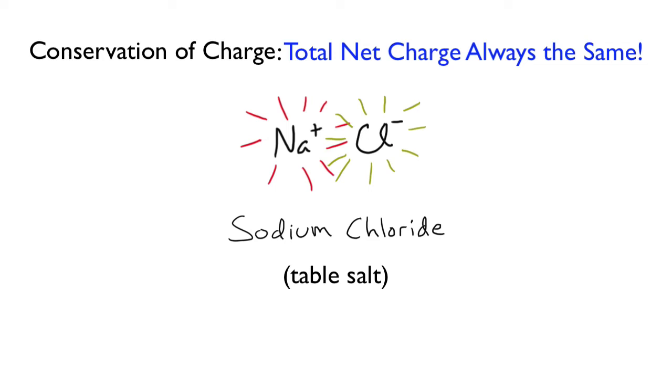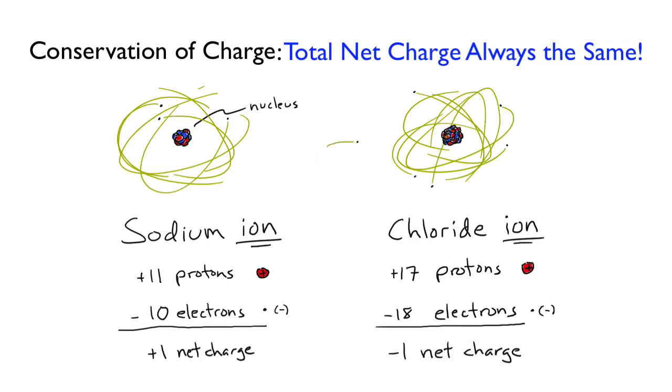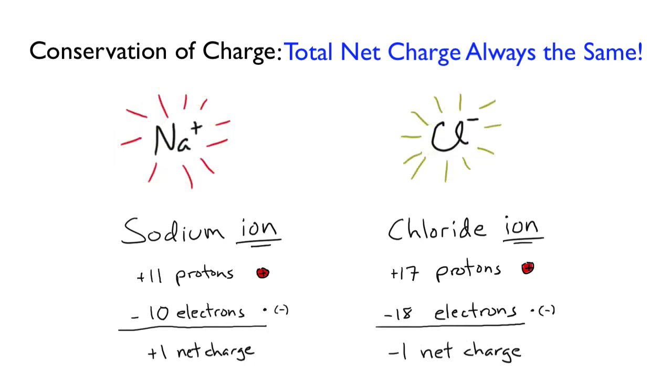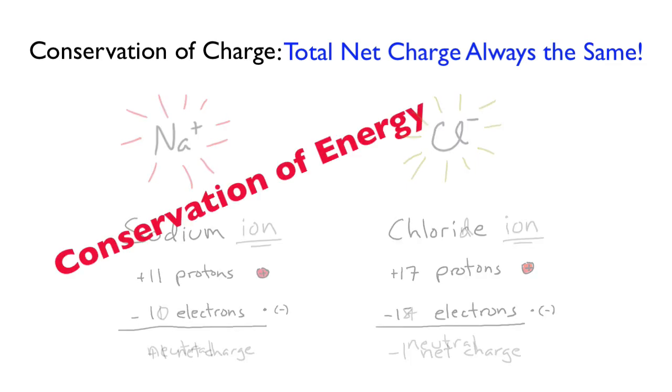Electrons can move about to create regions where there is a buildup of negative charge while leaving behind a region of positive charge. Yes, but the total amount of charge always remains the same. We call this the conservation of charge, which is a fundamental principle in physics, much like the conservation of energy and the conservation of momentum.